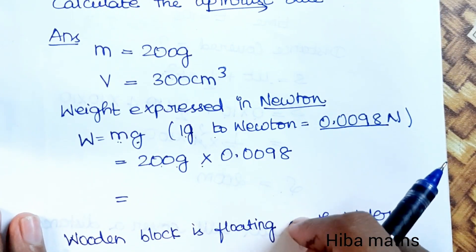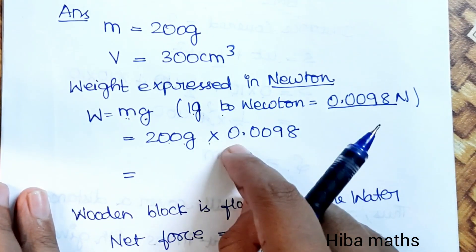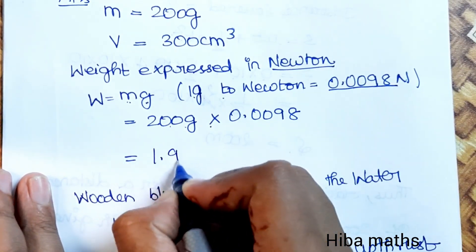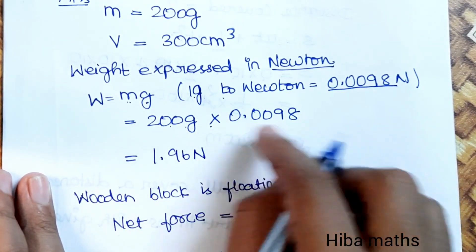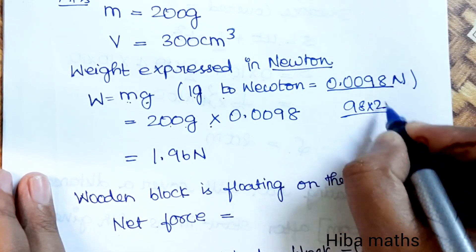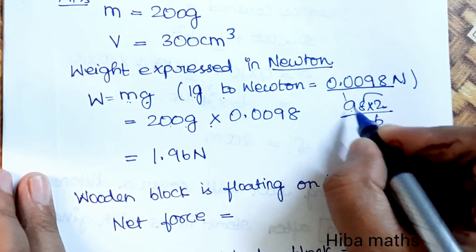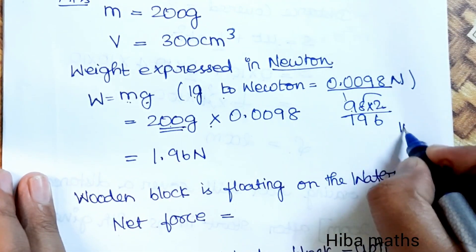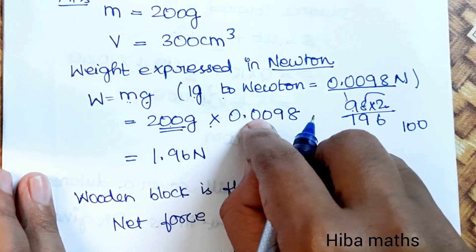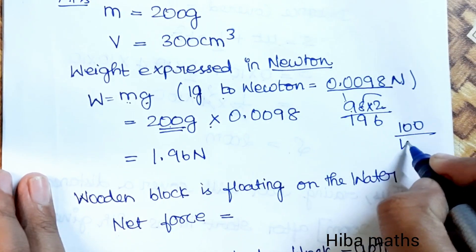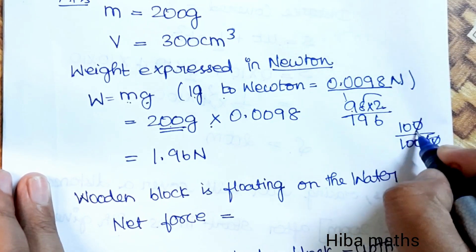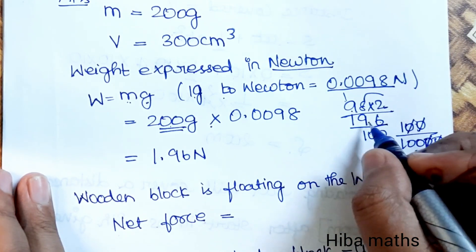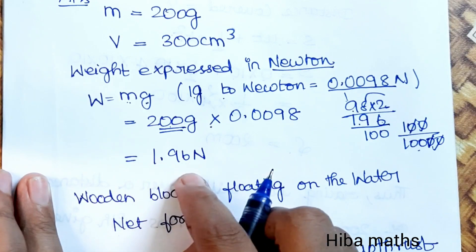We multiply 200 by 0.0098. Dividing and simplifying: 200 × 0.0098 = 1.96 N. Cancelling units and dividing by 100, we get 1.96 N.